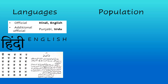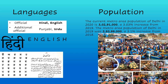The majorly spoken languages in Delhi for official purposes are Hindi and English, and for additional official purposes, Punjabi and Urdu. The current metro area population of Delhi in 2020 is 30,910,000, a 3.03% increase from 2019. The metro area population of Delhi in 2019 was 29,939,000, a 3.1% increase from 2018.